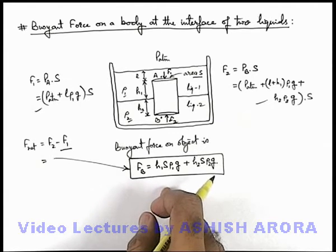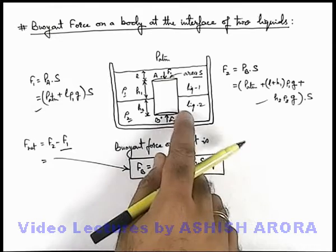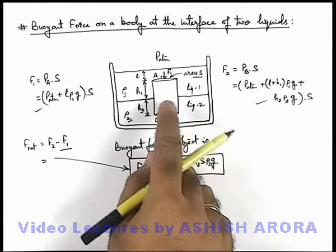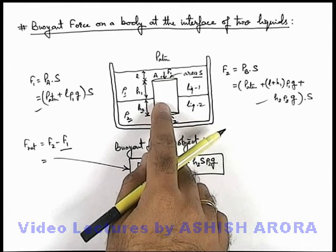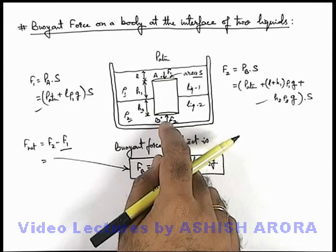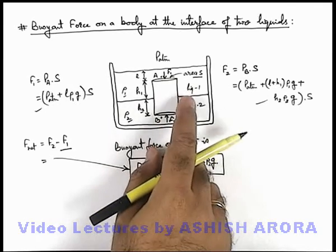But if in a situation we're required to find only the force applied by liquid 2 on the cylindrical object, then it'll only be F₂. And if we're required to find the net force applied by liquid 1 on the object, it'll be calculated as just the calculation of F₁.